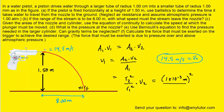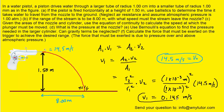Radius 1 is the radius of the larger tube, which is 1 centimeter — 1 times 10 to the minus 2 meters — and we square that as well, plugging in 14.5 meters per second for V2. When we simplify, we get 0.145 meters per second. That is the speed V1 at which the plunger must be moved — the correct answer to part C.